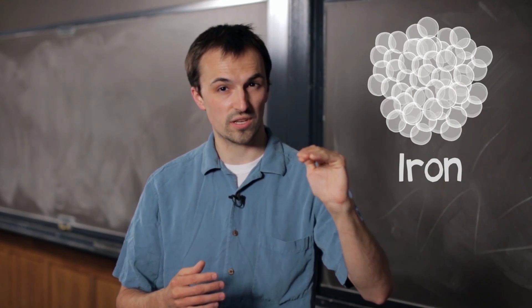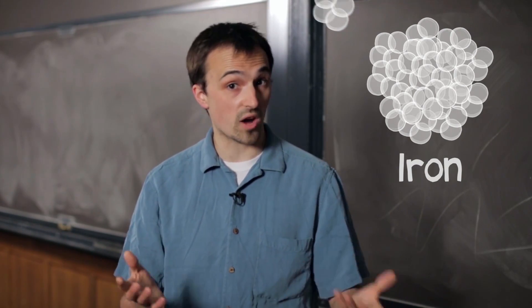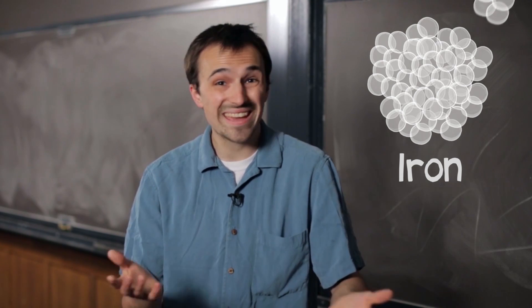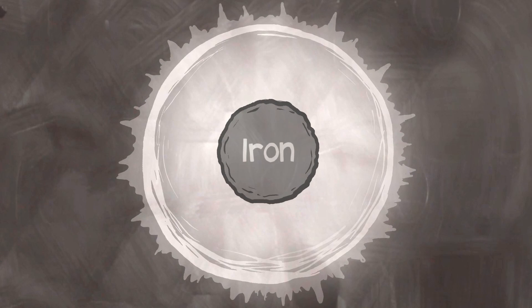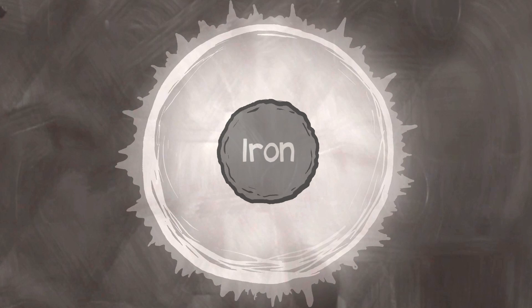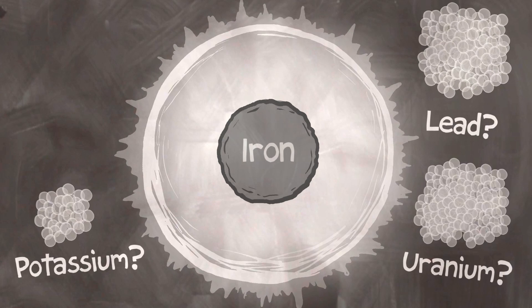But here's where the process stalls. No matter how big or bright or hot the star gets, you just can't get past iron. So this big ball of iron develops in the middle of the star. But what about all the other elements, like potassium and lead and uranium?